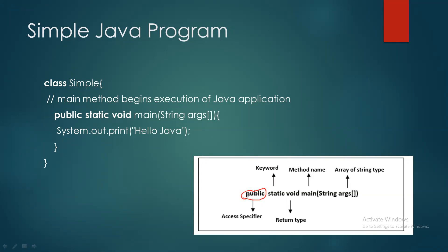'Static' ایک keyword یا reserved word ہے۔ اس کا purpose یہ ہے کہ جب بھی کوئی function static بناتے ہیں تو اسے call کرنے کے لیے کسی object کی ضرورت نہیں ہوتی۔ Main کا function خود بخود call ہونا چاہیے کیونکہ program کی execution ہمیشہ main سے start ہوتی ہے — اس لیے اس کے ساتھ static keyword رکھا ہے۔ 'void' return type ہے — main میں کچھ بھی return نہیں ہونا اس لیے void رکھتے ہیں۔